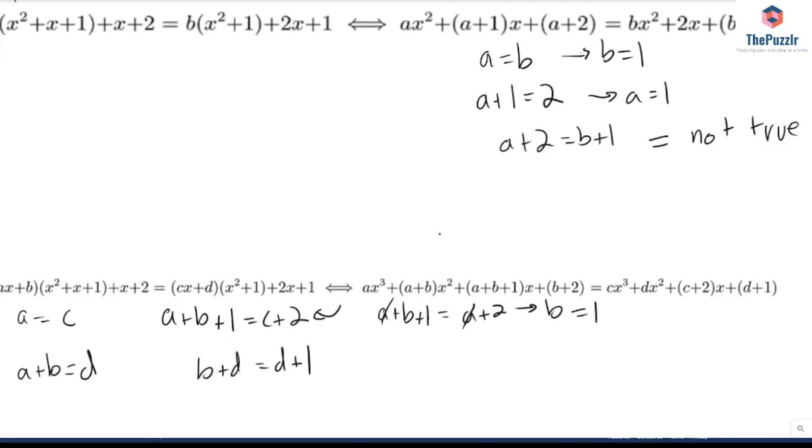Now if b equals 1, what else do we have from there? So we have that this should be a 2. So we have that b + 2 equals d + 1, which means that 3 equals 2 + 1. So d equals 2.